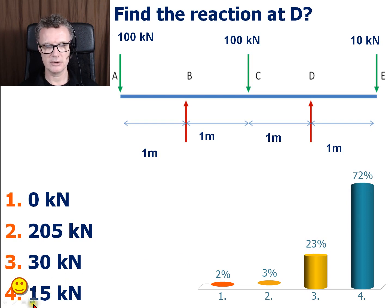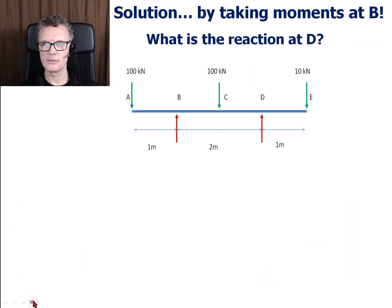So let's have a look at my solution. I did the solution by taking moments about B to find what the reaction is at D. So here I'm going to take that B point to be my pivot.